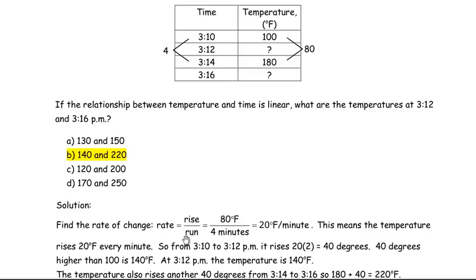Remember rate of change is rise over run. To go from 100 to 180, it's going up 80, and that's 80 degrees Fahrenheit. And from 3:10 to 3:14 is 4, and this would actually be minutes here. So the rise is 80 degrees Fahrenheit, the run is 4 minutes, 80 divided by 4 is 20. So the temperature is rising at a rate of 20 degrees Fahrenheit per minute.